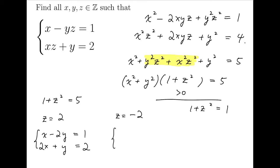And for z equals minus 2, the system we will have is x plus 2y equals 1, and minus 2x plus y is 2.